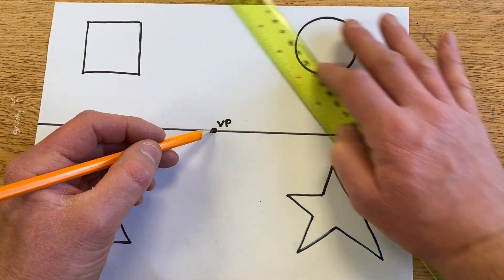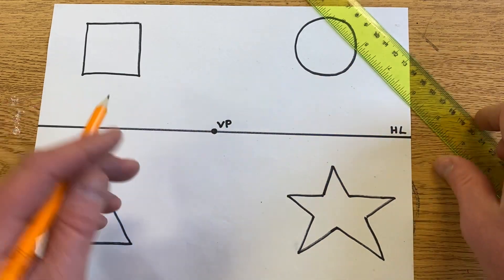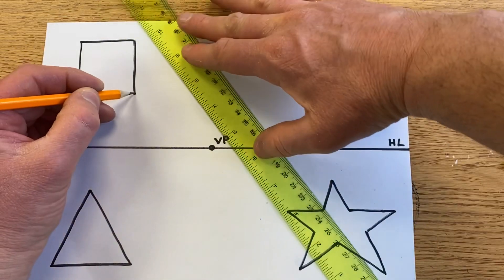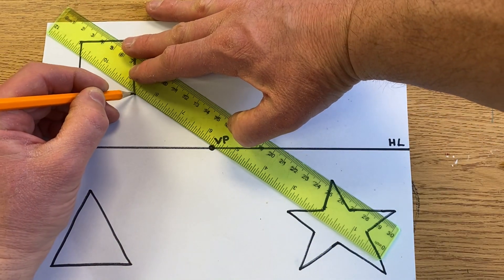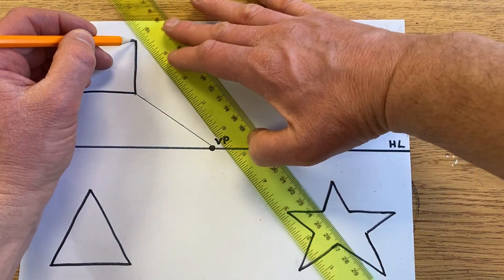We're going to have it going directly to this dot here—this is our one point, our vanishing point. This is where all our lines are going to be drawn. You take a ruler, line it up, and once it's lined up, you just draw your line. I'm going to do that for each corner.